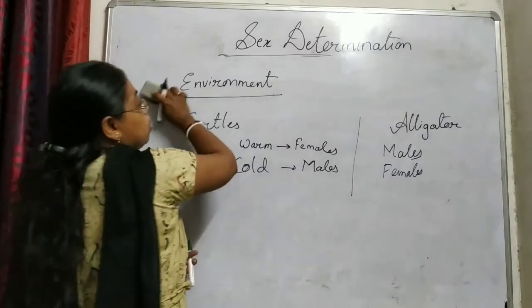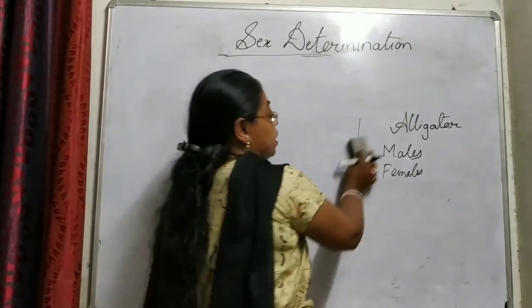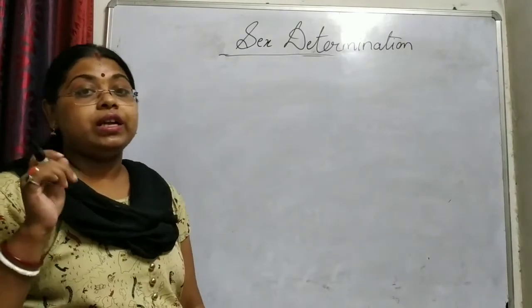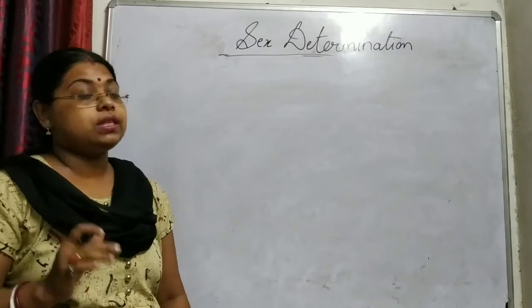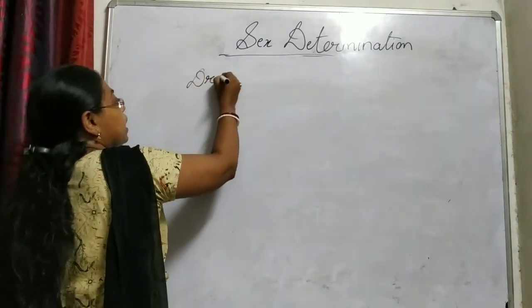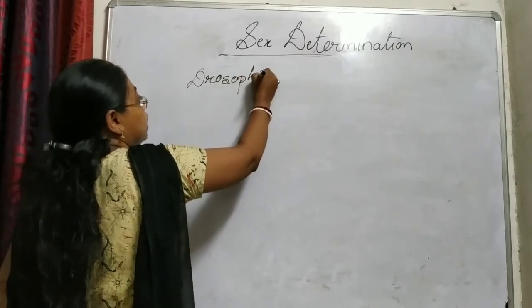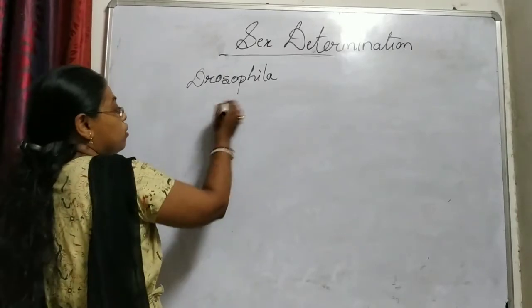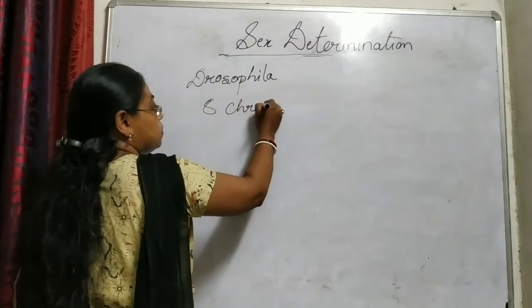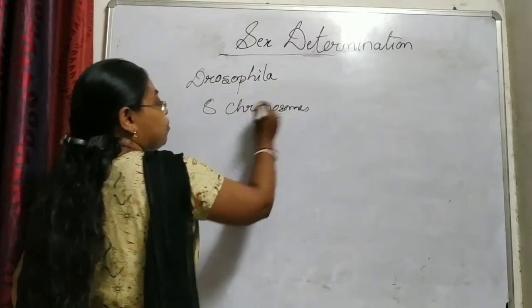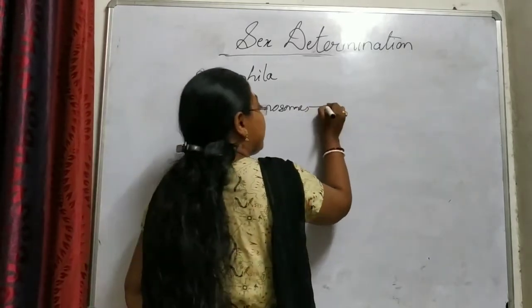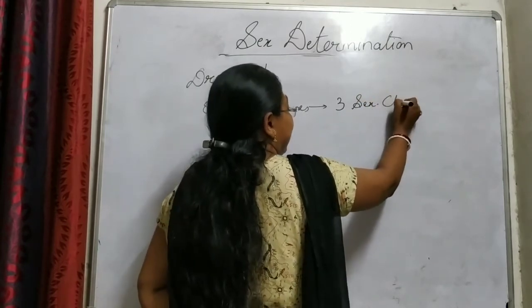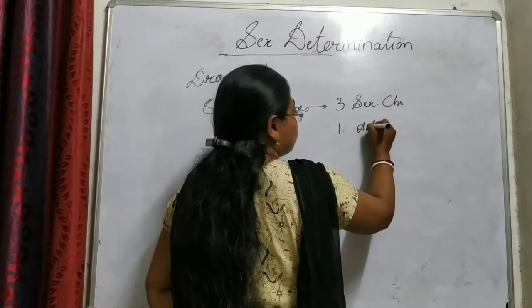Now we will focus on sex determination in Drosophila. It is a very important topic for CSIR UGC NET. In Drosophila, sex is not dependent upon X and Y alone. In Drosophila melanogaster there are 8 chromosomes. Apart from these 8 chromosomes, we have 3 pairs of autosomes and 1 pair of sex chromosomes.